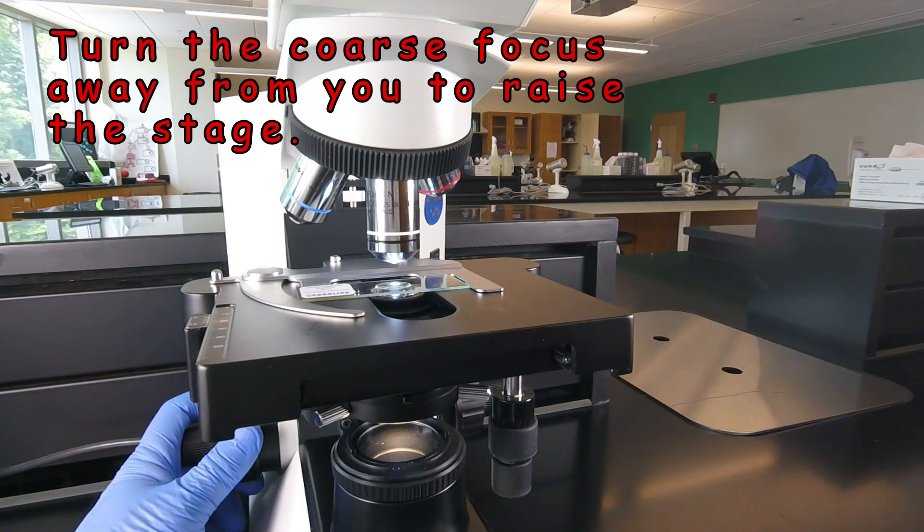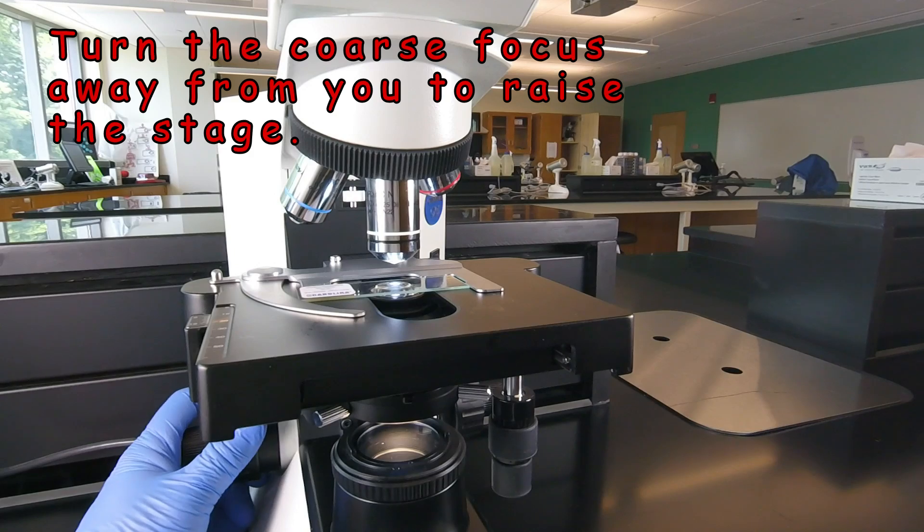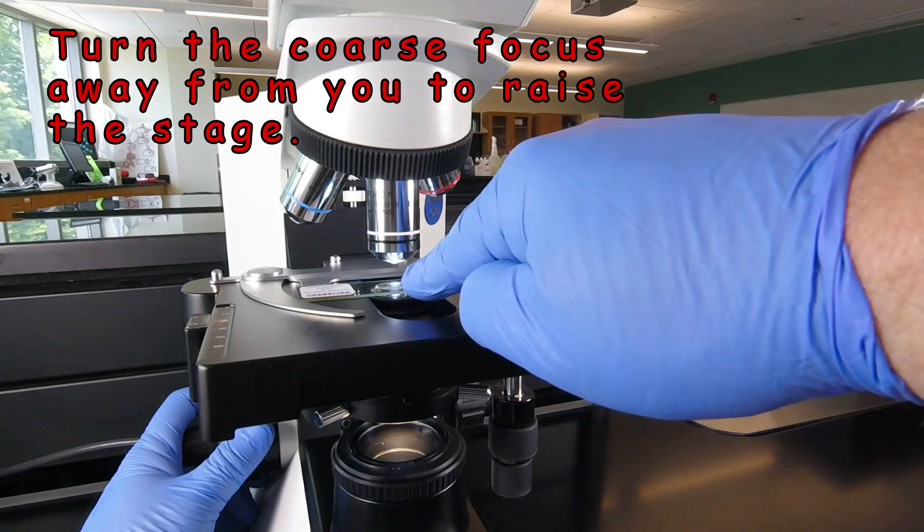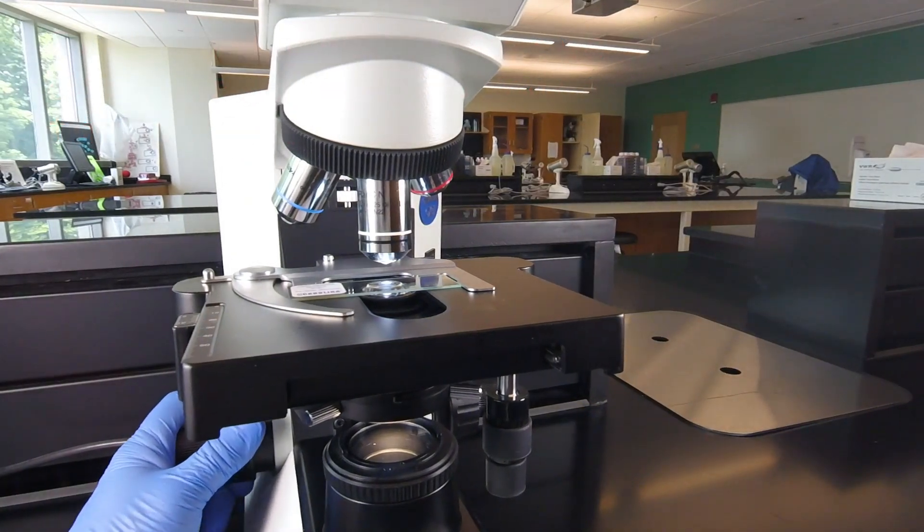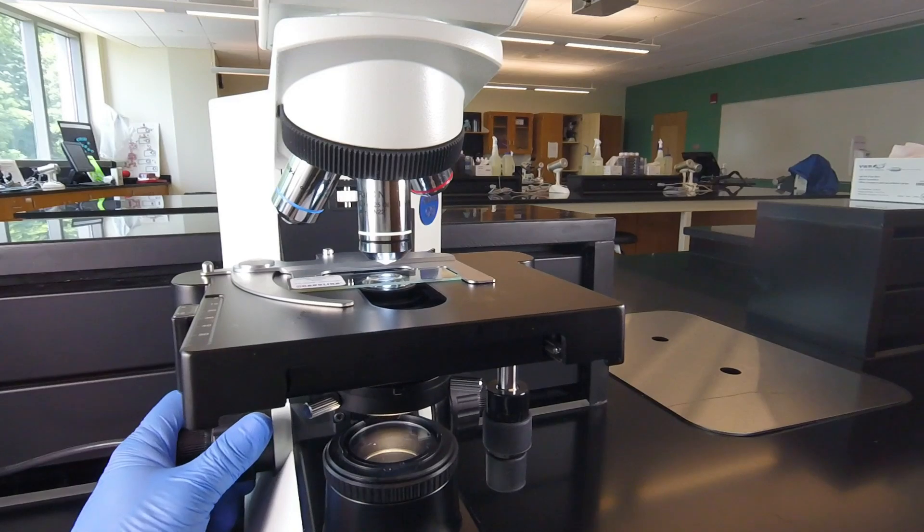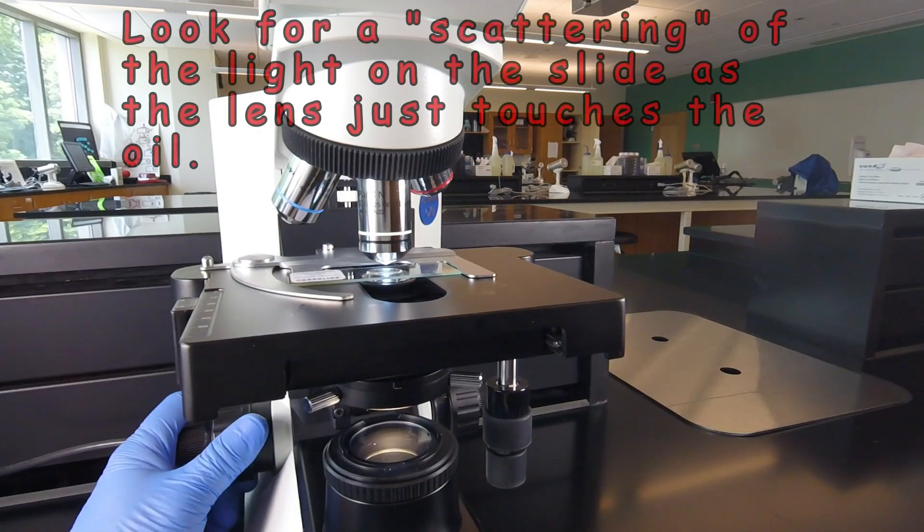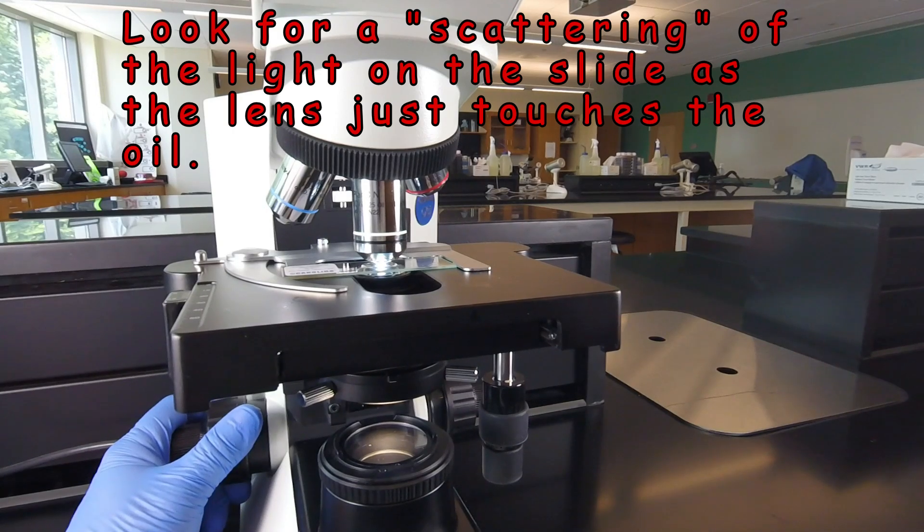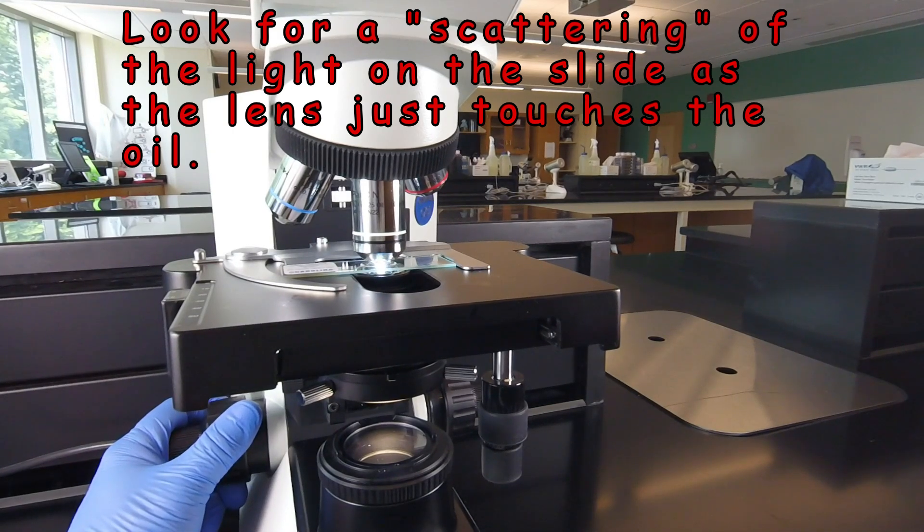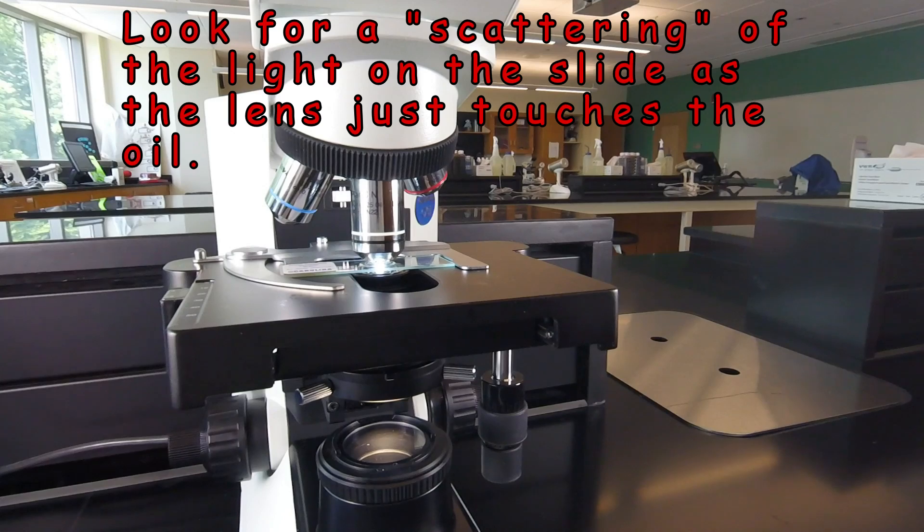We're going to do this very slowly while getting our eyes down where we can see what's happening and watch the interface between the lens and the drop of oil. So we slowly raise the stage, watching the drop of oil. When the lens just hits the drop of oil, you see the light kind of scatter like you see there.